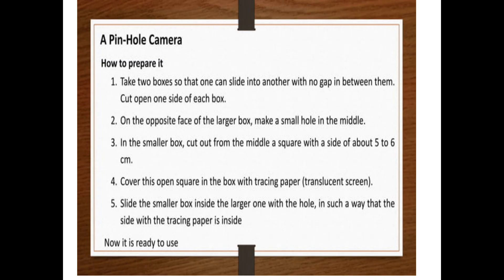A pinhole camera. Now here we are going to prepare the pinhole camera using the following points. First of all, you have to take two boxes so that one can slide into another. It means one should be big and another should be little. Let's cut open one side of each box. On the opposite face of the larger box, make a small hole in the middle. Both of the boxes should be one side open, so in the larger box, a small hole should be made in middle.